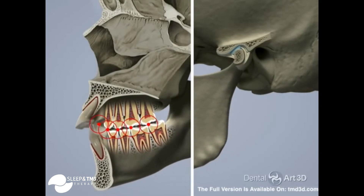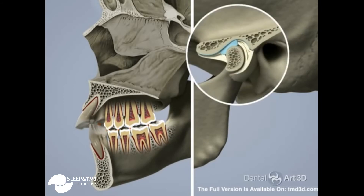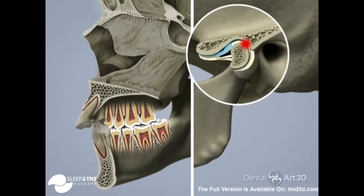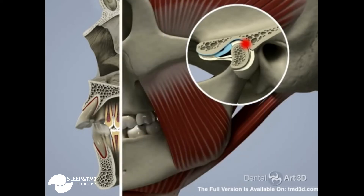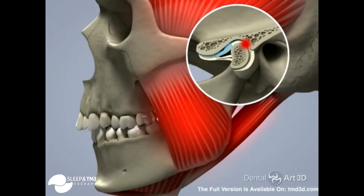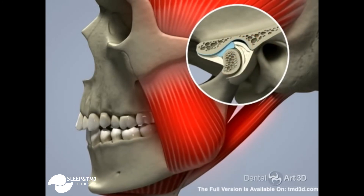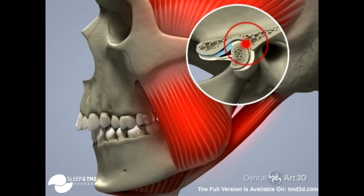Premature contacts shift the lower jaw distally off of the physiologic trajectory. The narrowing of the upper arch pushes the lower jaw back, forcing the TMJ condyle to shift distally while the TMJ disc shifts forward. Upon opening, the disc can shift onto the condyle to restore the TMJ's correct position, and then shift back to an incorrect forward position upon closing. This is what causes a reciprocal click.